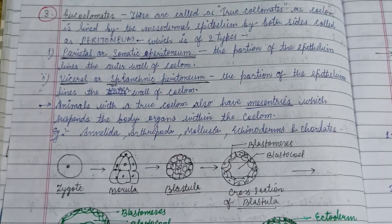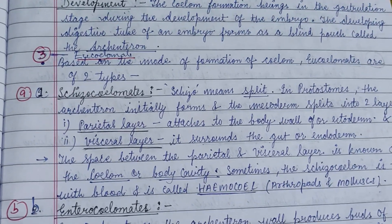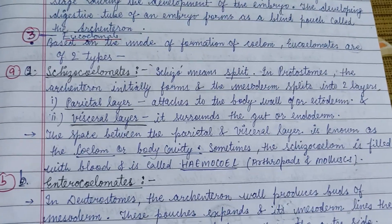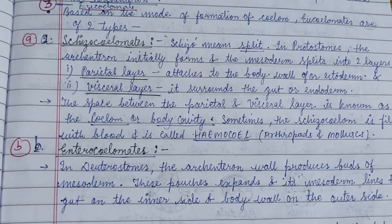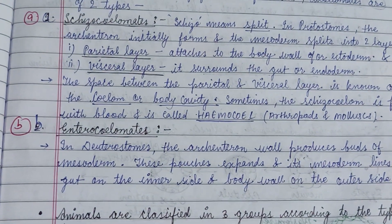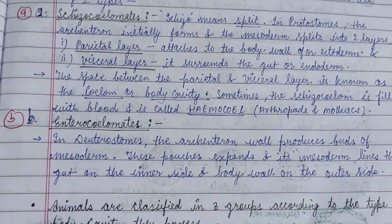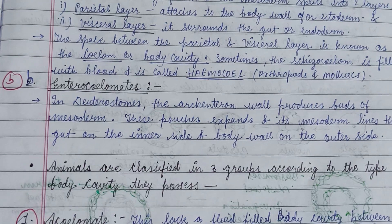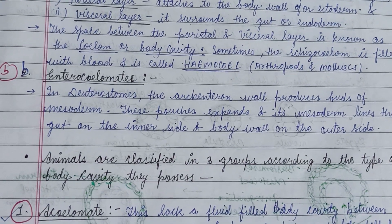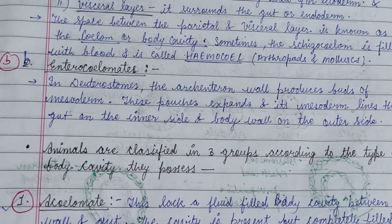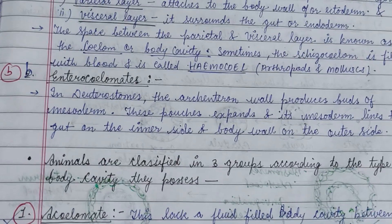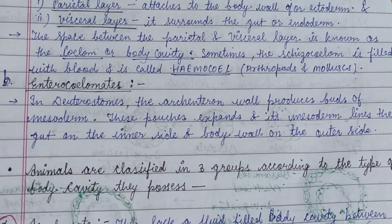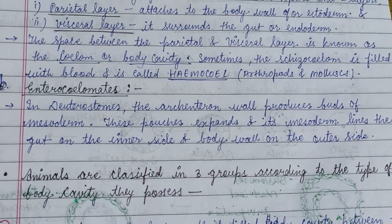Eucoelomates are further subdivided into schizocoelomes and enterocoelomes. In schizocoely, found in protostomes, the archenteron initially forms and the mesoderm splits into two layers — the parietal layer and the visceral layer. Sometimes the schizocoelom is filled with blood and is called a hemocoel, as seen in arthropods and mollusks.